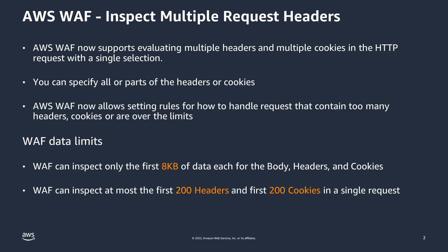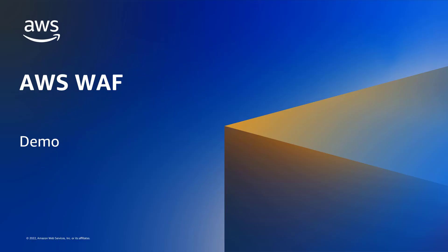Because there are limits on the size or the numbers of headers or cookies, AWS WAF provides rule choices on how to handle a request if the content exceeds the limit thresholds. Now we're going to look at this new feature in action.